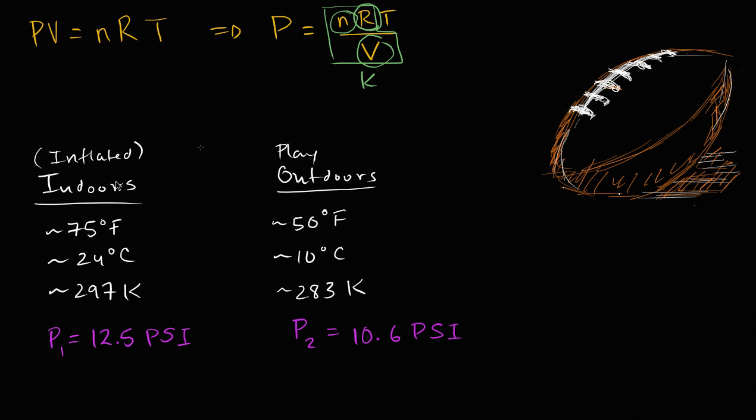So we can simplify all of this to P, pressure, should be some constant times temperature. Because once again, we're assuming volume doesn't change, we're assuming no air is let in or out. So when you look at it this way, any percent change on temperature should have the same percent change in pressure. So let's see if the change in temperature, the percent change, is consistent with the percent change in pressure that was actually observed. When we look at the temperature, we should be doing it in Kelvin.